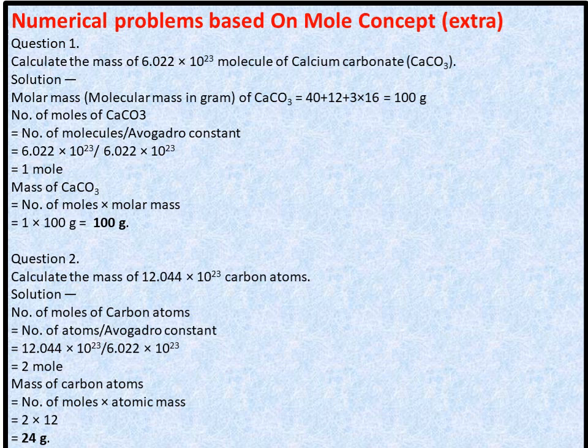Extra numericals. Q1: Calculate the mass of 6.022 × 10²³ molecules of CaCO₃. Molar mass of CaCO₃ = 100g. Number of moles = 6.022 × 10²³ ÷ 6.022 × 10²³ = 1 mole. Mass = 1 × 100 = 100 grams.